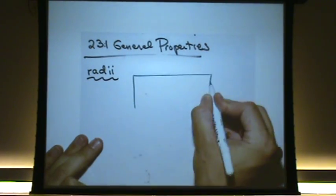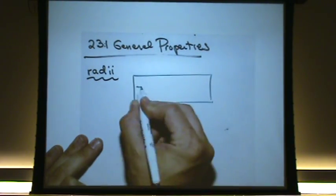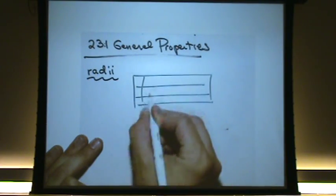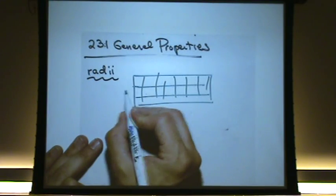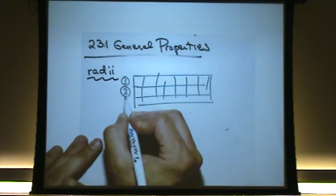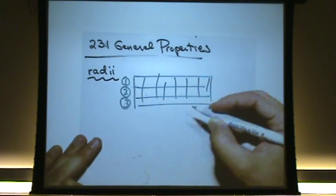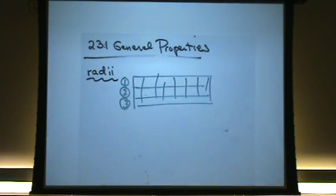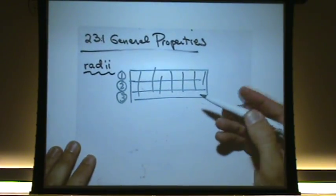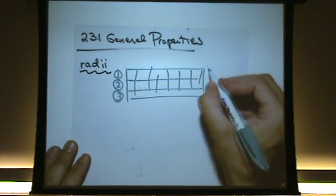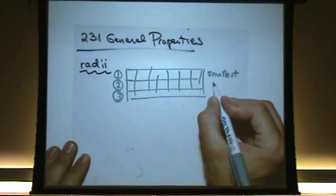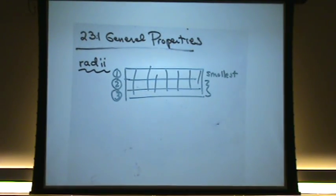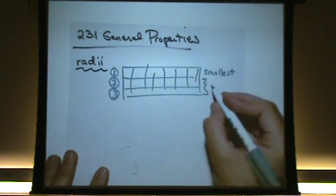So the transition metals, if I kind of do a mini periodic table here. Okay, there's a bunch of them. There's three rows: row one, row two, and row three. And there's a bunch of elements. It turns out that this is the smallest row. However, you would think that the second row is larger and the third row is even larger. However, that's kind of true.